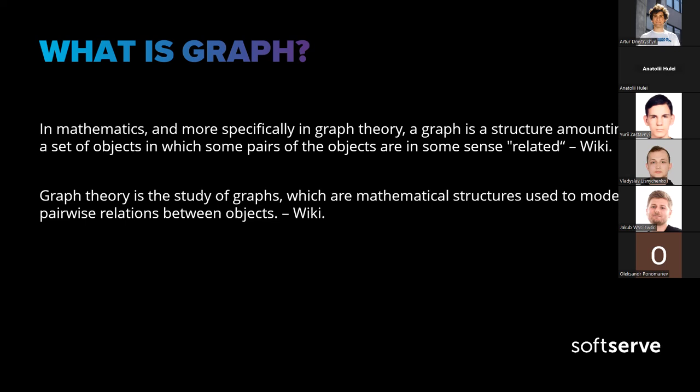Graphs can be used in many different areas. The most obvious example is the representation of a social network, where each user is represented as a node and all their activities, suggestions, and friend lists are represented as edges between nodes. This representation enables us to answer questions like how many friends a person has and how many mutual friends person A and person B have. Graph theory is the study of graphs, which are mathematical structures used to model pairwise relations between objects.